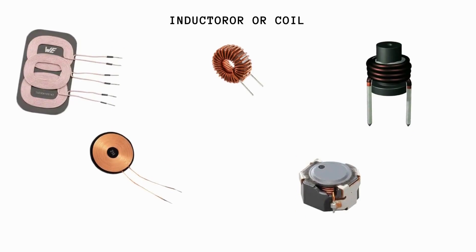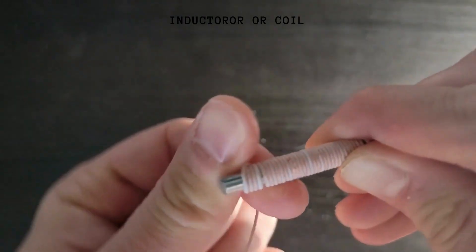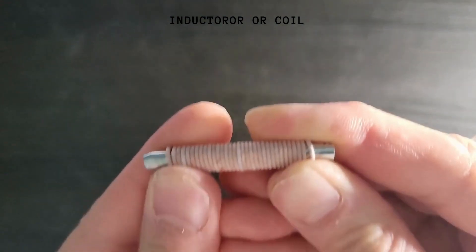An inductor, also known as a reactor or coil, is a coil of wire often wrapped around a core made of a magnetic material such as iron.